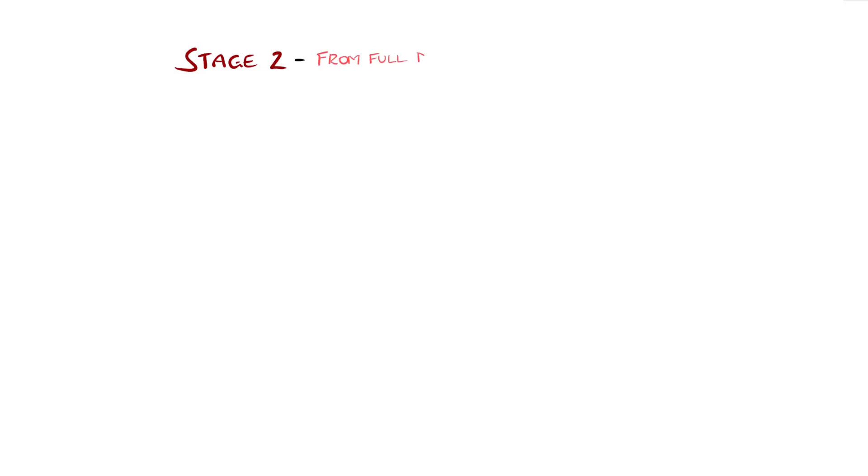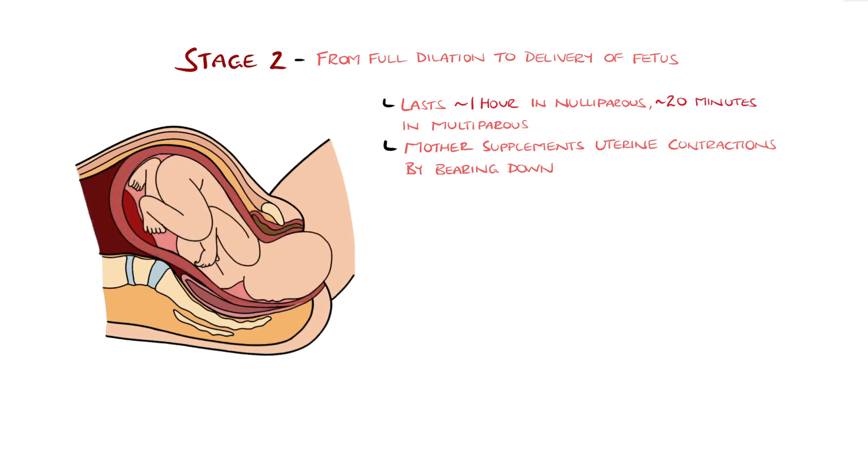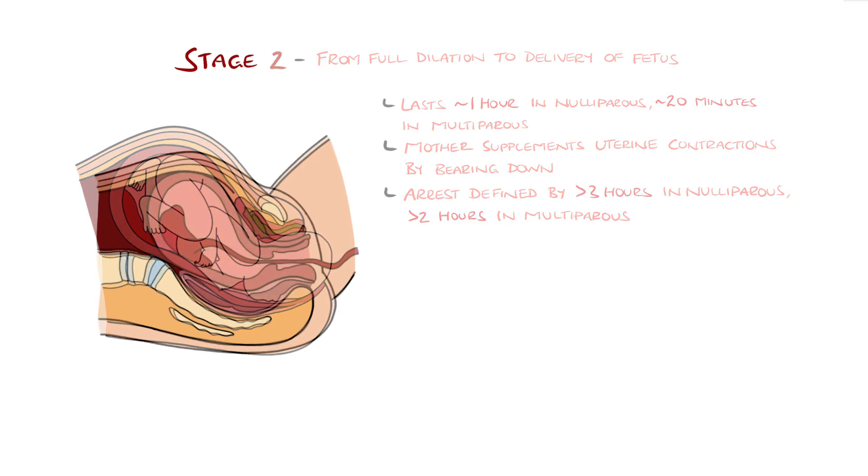The second stage spans from full dilation to delivery of the fetus. This typically lasts just under an hour in nulliparous mothers and around 20 minutes in multiparous. In this stage, the mother supplements the uterine contractions by bearing down, something that should be discouraged in the first stage until the cervix is fully dilated, as it could cause tearing of the cervix. This stage is considered arrested when it lasts beyond 3 hours and 2 hours respectively for nulli and multiparous mothers.